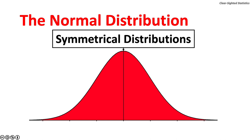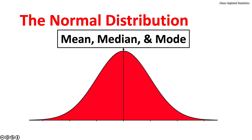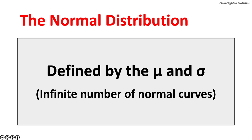Normal distributions are symmetrical distributions. The center of the normal distribution is the mean, median, and mode. The simplest normal probability distribution is defined by the population mean and population standard deviation. Because there are an infinite number of means and standard deviations, there are an infinite number of normal distributions.